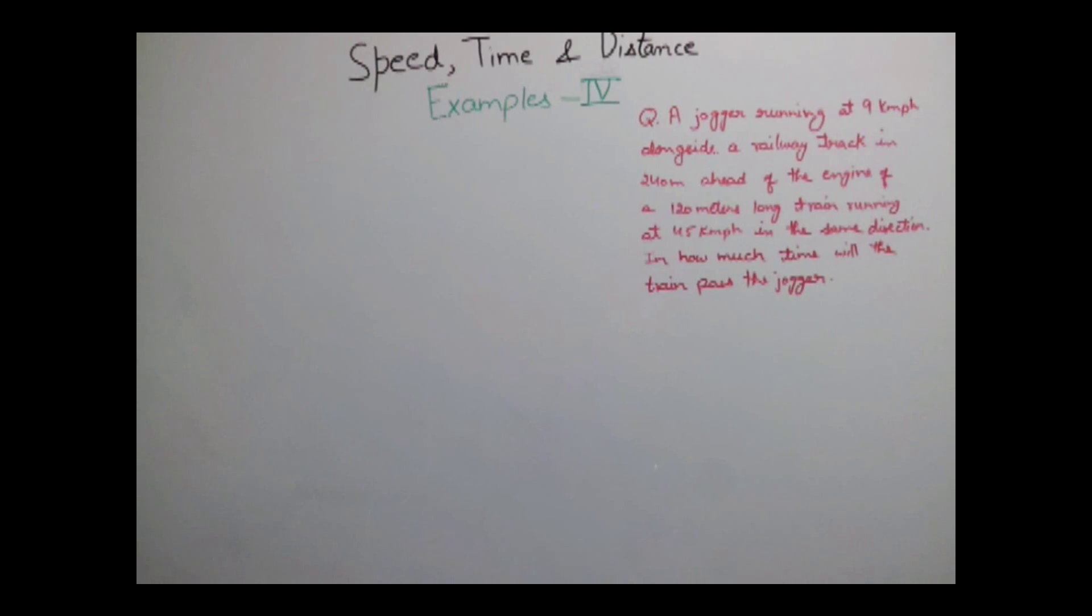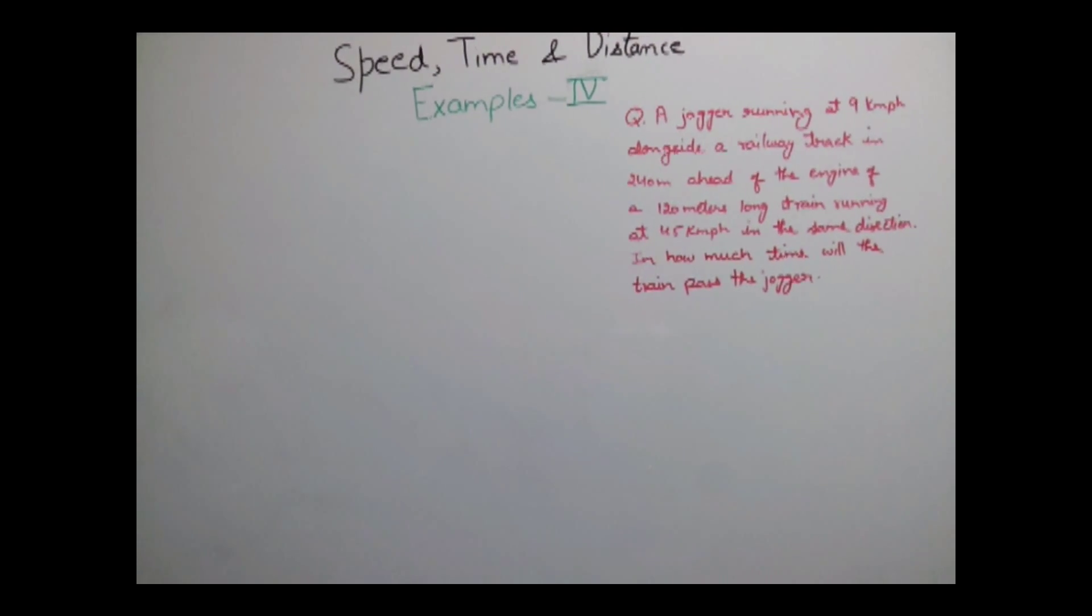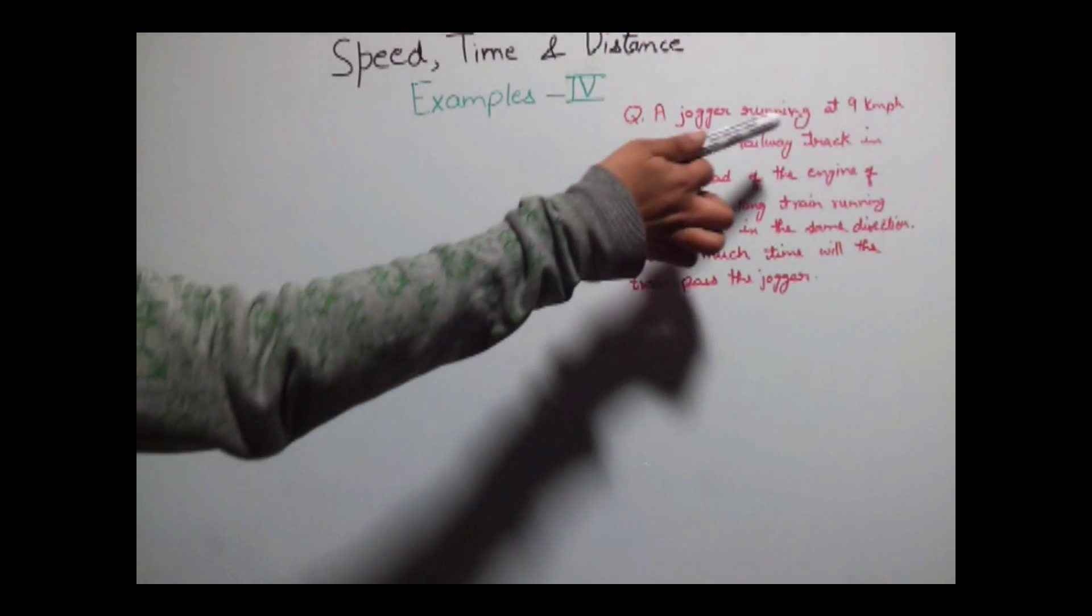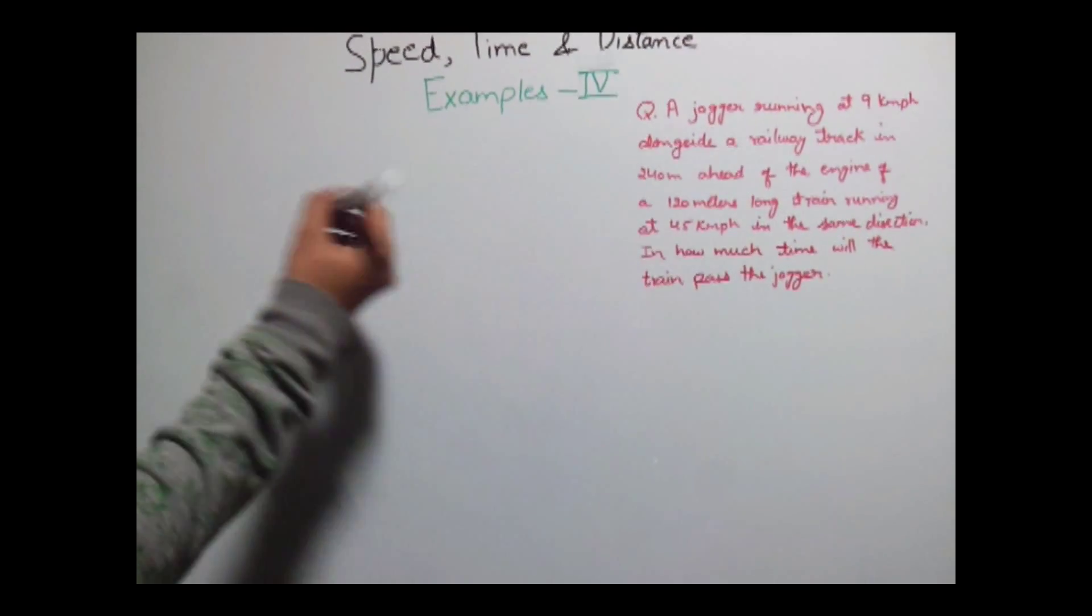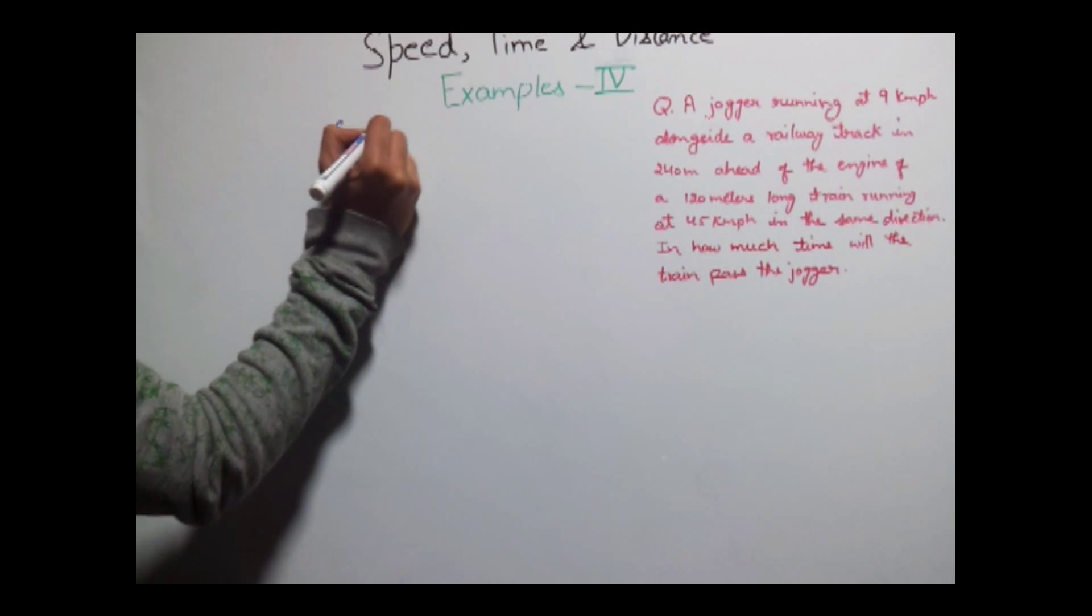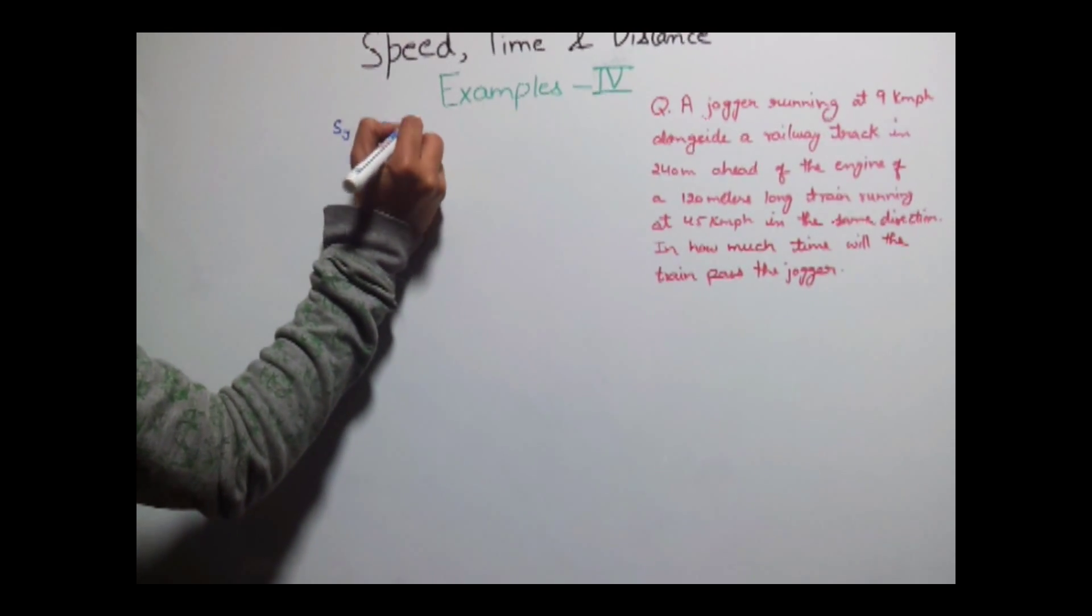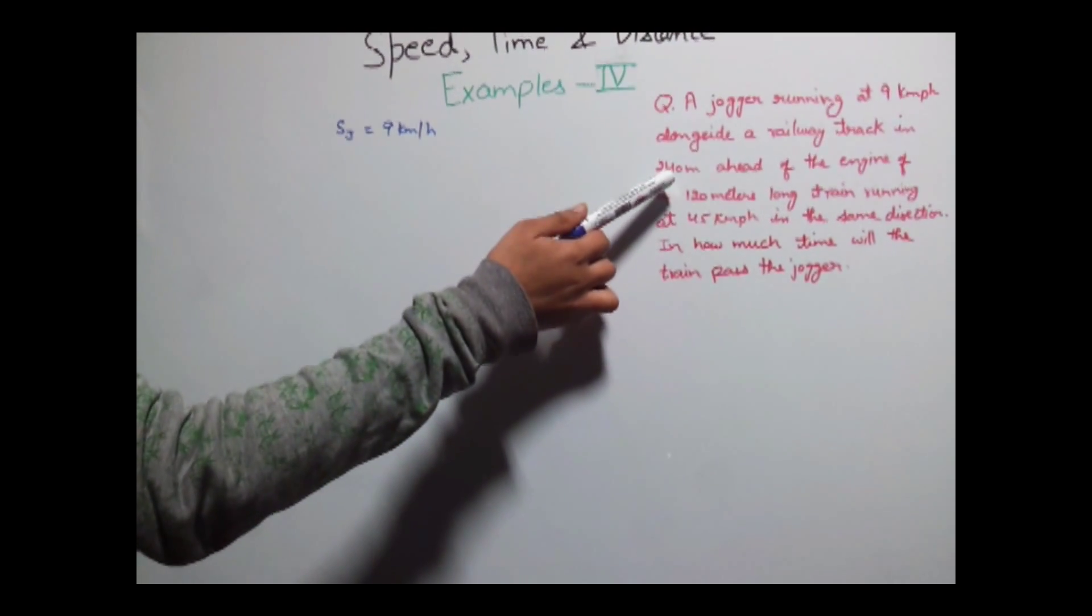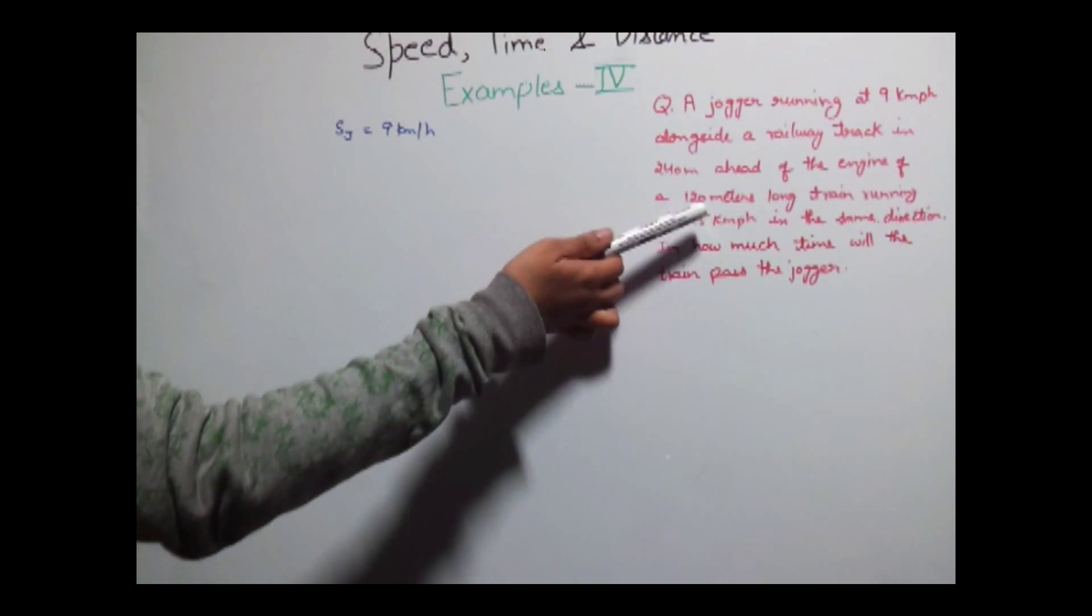Now this is a simple question, only the language is a little bit different. Here it is given that jogger is running at 9 km per hour. So speed of jogger is equal to 9 km per hour and he is running alongside a railway track 240 meters ahead of the engine.